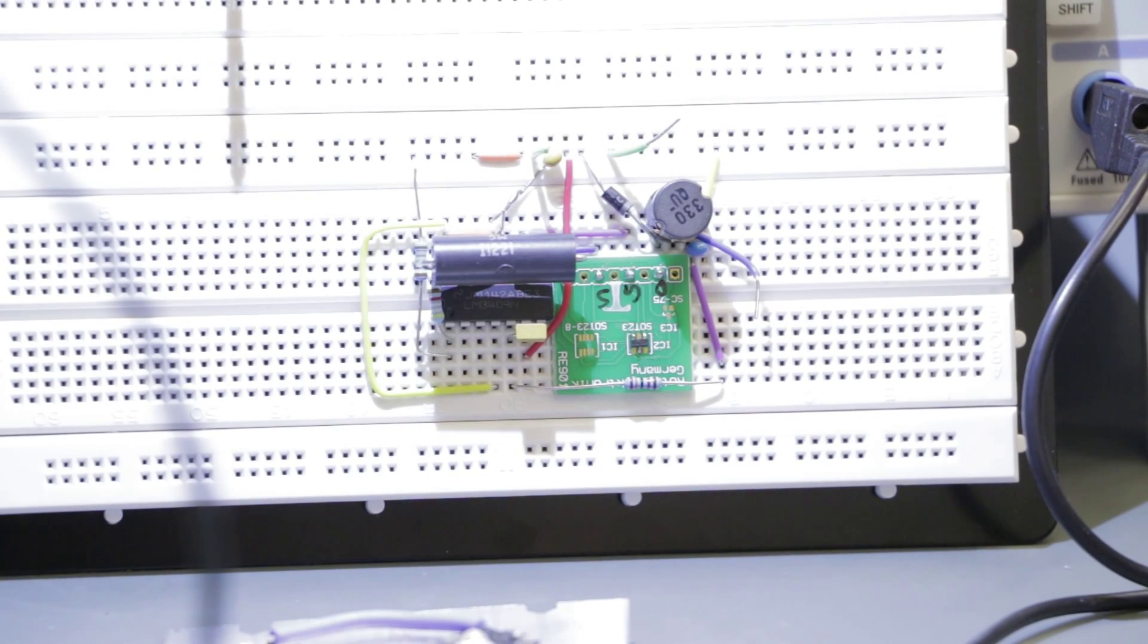You can see that most of the components that we are using on our prototype here are through hole. The exception to that is the FET that we are using down here which is a surface mount component. In order to use the surface mount component we use something called a breakout board.